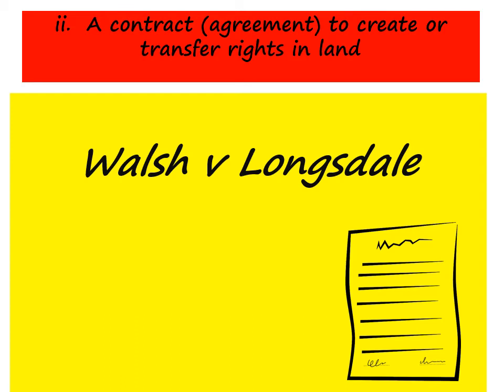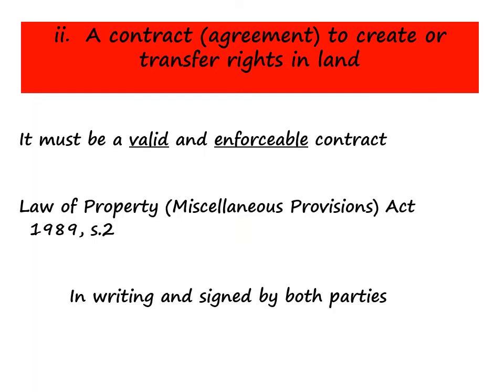In Walsh v Longsdale, the parties had made a valid contract for a seven-year lease. The tenants moved into the property but simply forgot to execute a valid deed, which they needed in order to have a valid legal lease. However, the courts held that the contract created an equitable lease. Something we also have to consider is whether the current formalities to create a valid contract in relation to land have been satisfied — Walsh v Longsdale was decided in 1882.